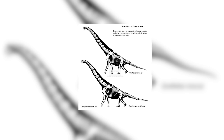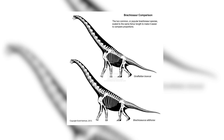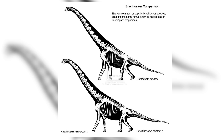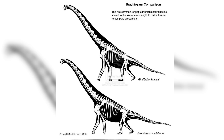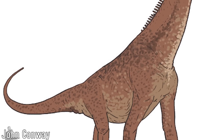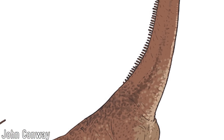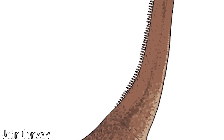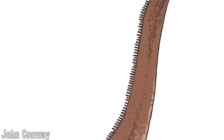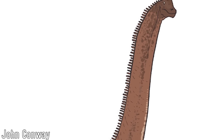The dorsal column of altithorax was found to be about 25–30% longer relative to the femur than that of brancai, with the neural arches also being taller and longer in altithorax. From this, Paul sought to separate the two, though the incompleteness of altithorax's remains meant he proposed a separation at the subgeneric level, giving brancai the subgenus name Giraffatitan — essentially Brachiosaurus (Giraffatitan) brancai — meaning 'Titanic Giraffe' to differentiate.